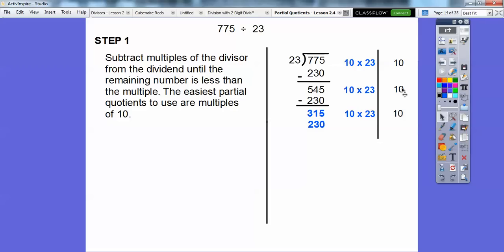See over here I'm adding up. Here's 10 times 230. Here's another 10. Here's another 10. We're going to add up these partial quotients at the end over here. We subtract 230 from 315. We get 85.